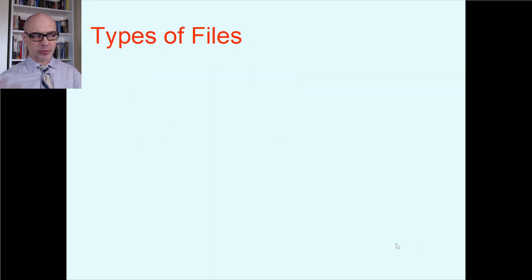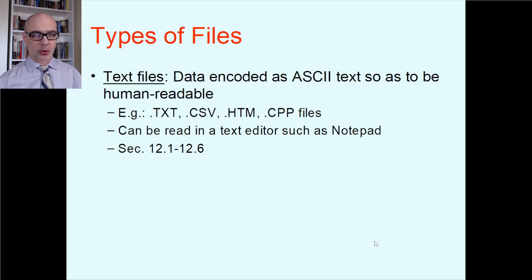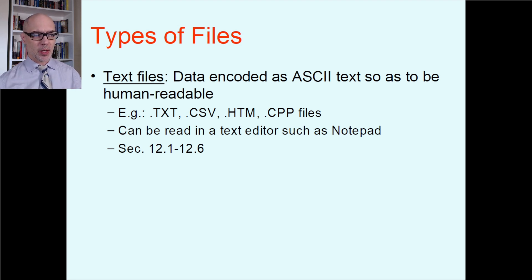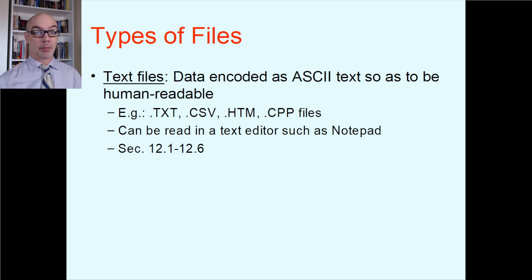As we go through Chapter 12, there are two primary categories of files. The first main category is what we call text files, where the data is encoded as ASCII text so as to be readable by human beings. Examples in the Windows world include files ending with .txt, .csv, .htm, or .cpp. A .csv file is a comma-separated values file — an easy way to send around spreadsheets. Lots of programs and websites deliver data as .csv files nowadays; for example, Blackboard does that, and many banks do too.